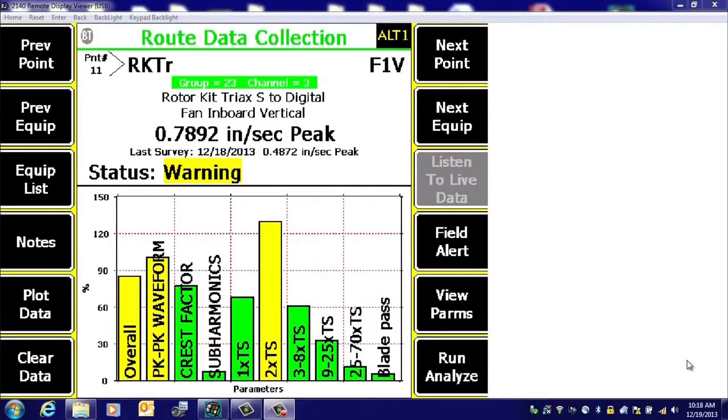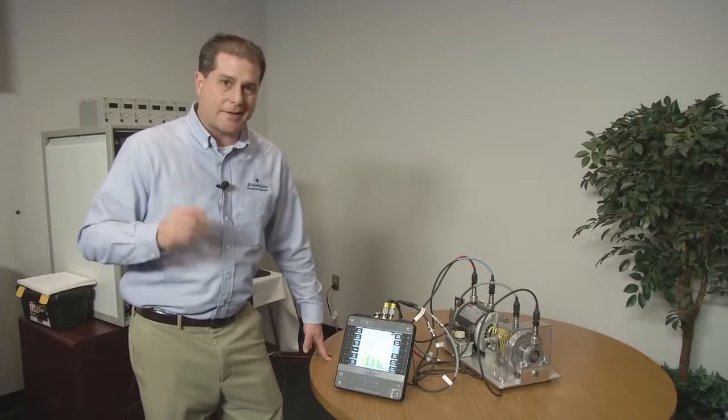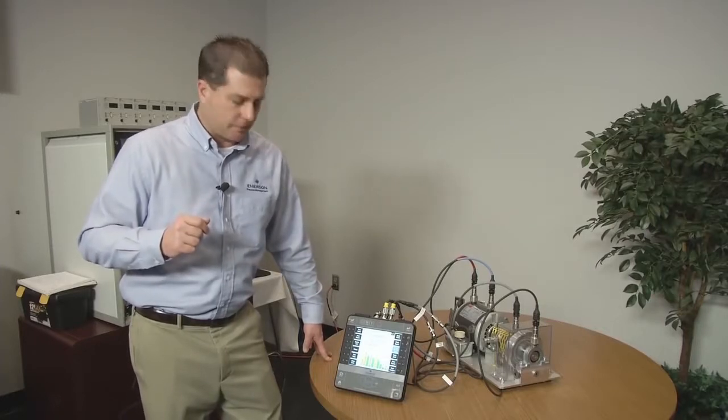Let's say I just collected this data off this machine and you can see a high two times running speed, turning speed peak here. And that tells us, well, maybe I'm suspecting a misalignment condition on this machine.